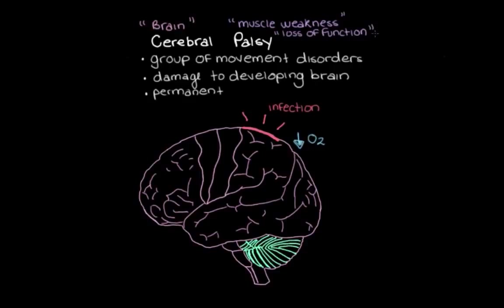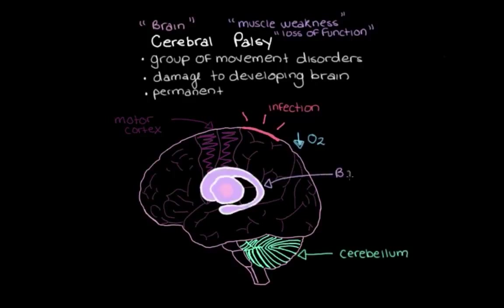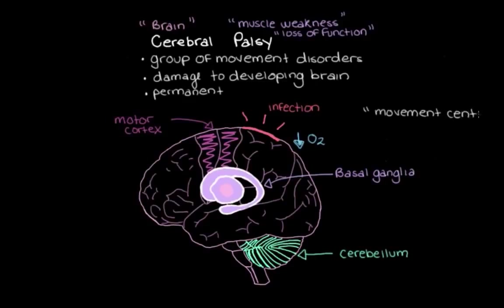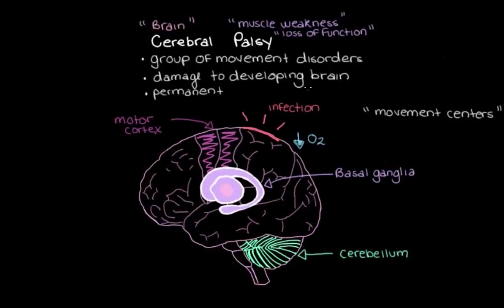Let's highlight the general parts of the brain involved in movement — these are typically the areas that get damaged to cause cerebral palsy. We have the cerebellum and the motor cortex, which are visible from the outside of the brain. And if we go deeper inside the core of the brain, we have the basal ganglia. These three parts are our movement centers, involved in helping us move our arms, legs, and torso, as well as maintaining balance, posture, muscle tone, and reflexes. When these movement centers or the neuron tracks connecting them and our muscles are damaged during development, the person will develop cerebral palsy.